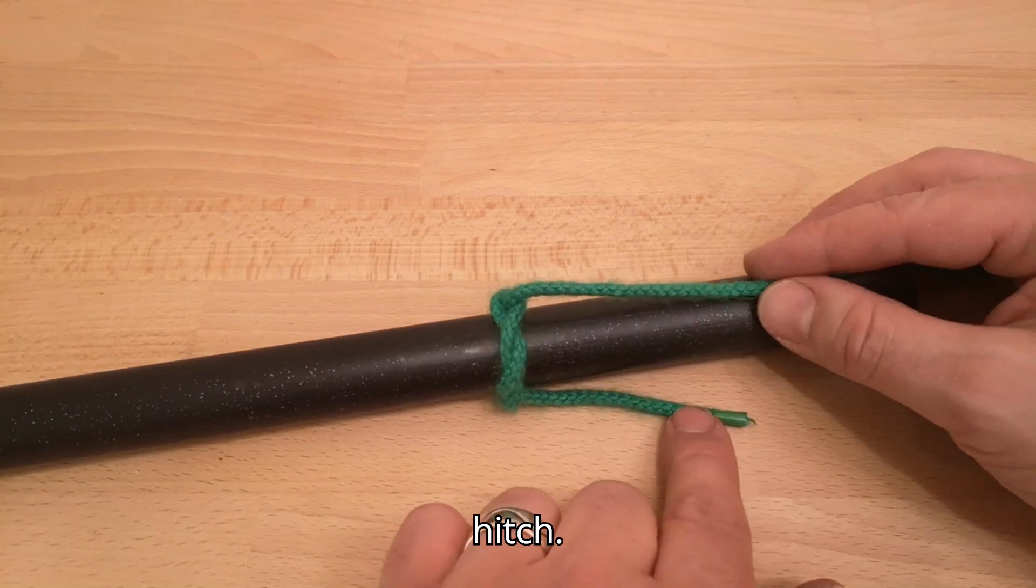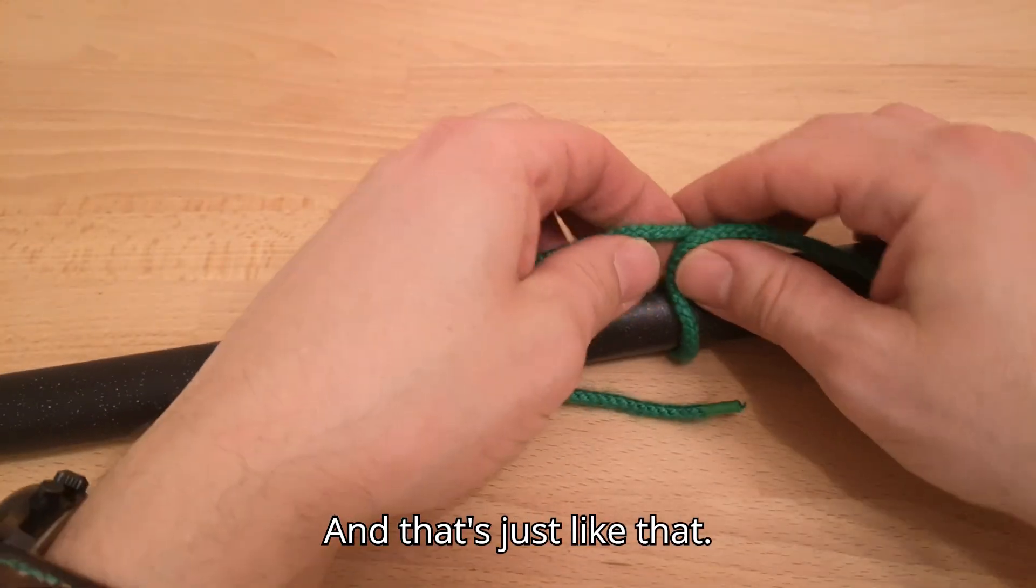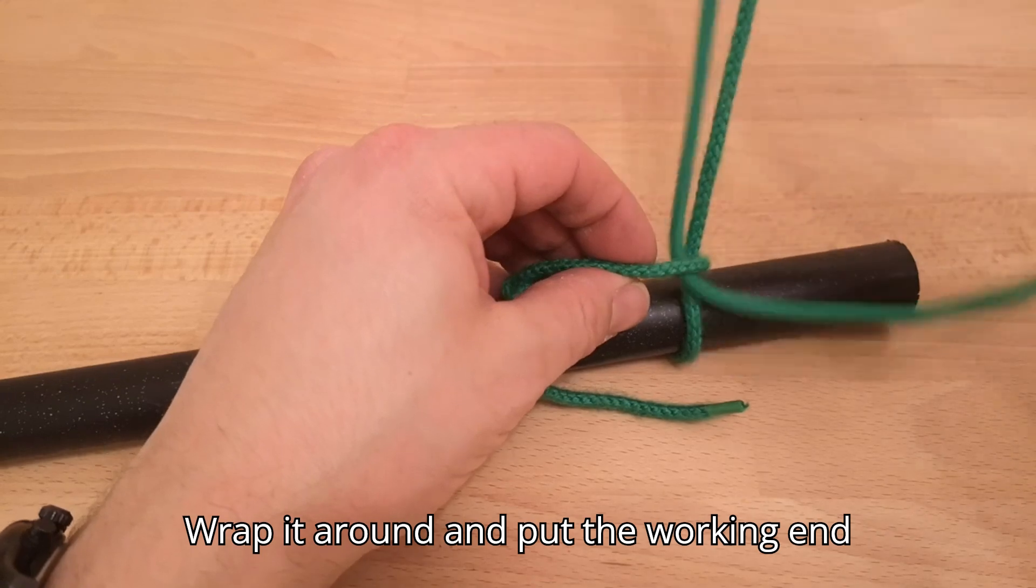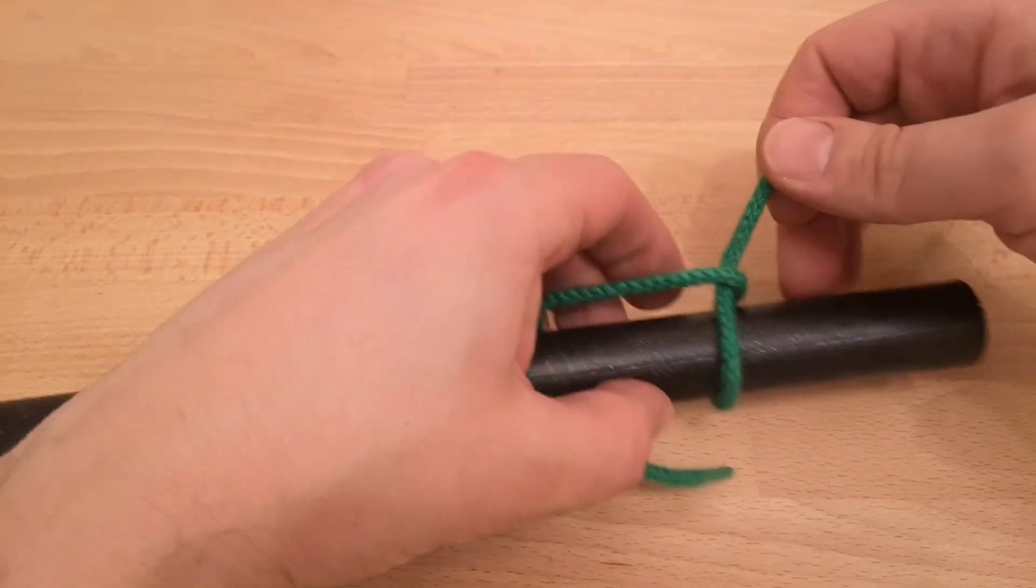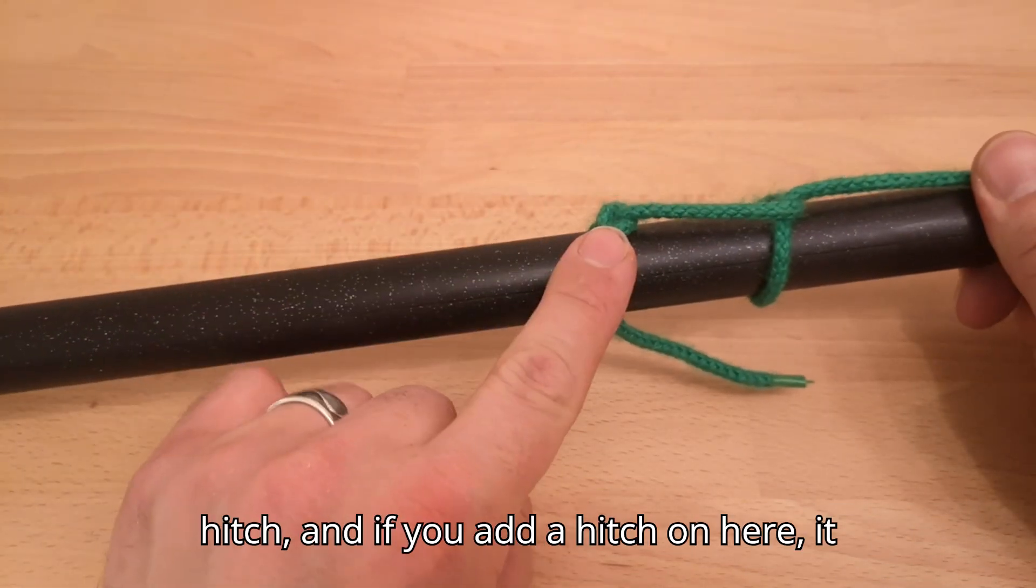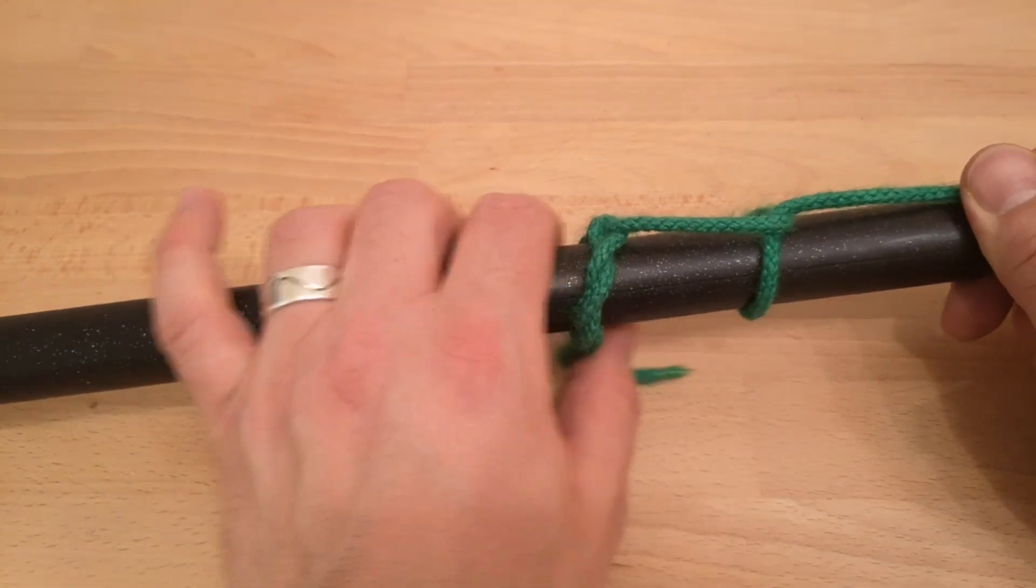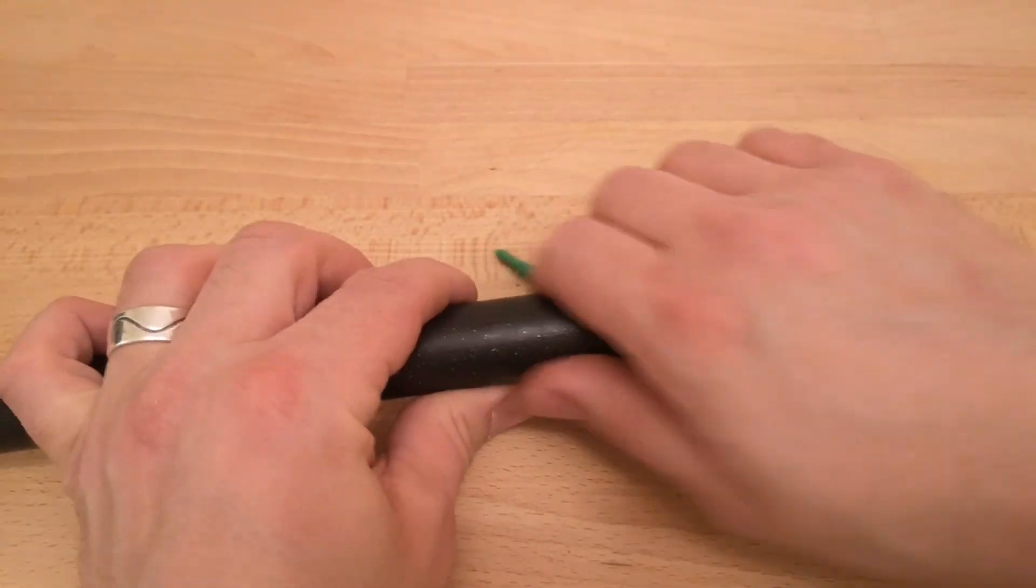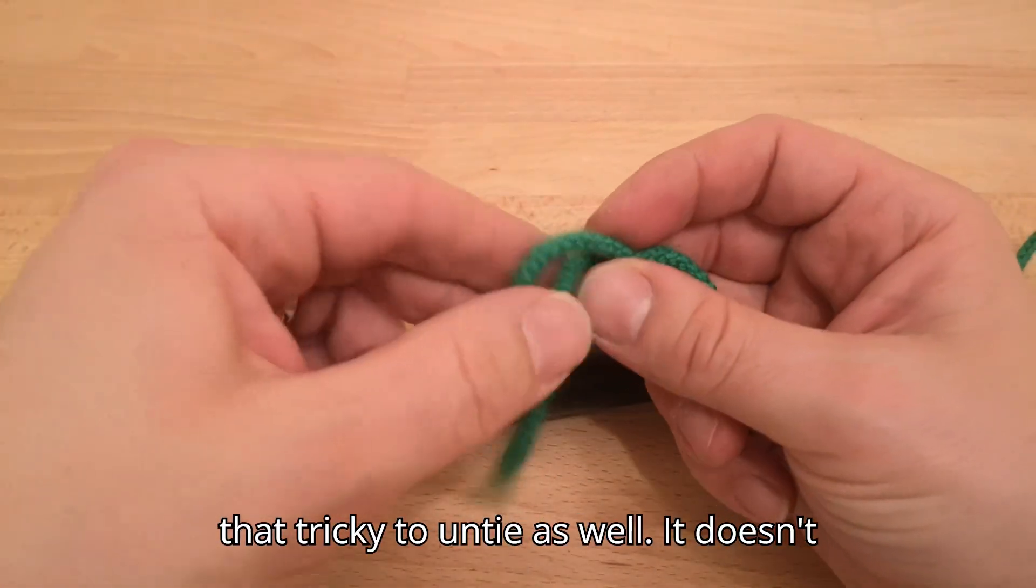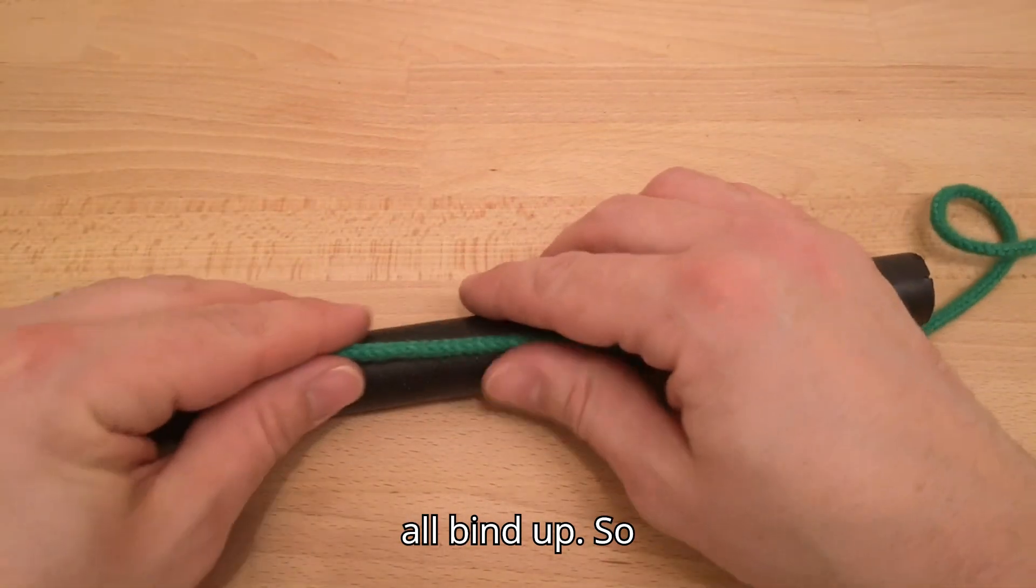And that's just like that—wrap it round and poke the working end through. There you go. So there's your timber hitch, and if you add a hitch on here, it becomes a killick hitch. Let's do that again, shall we? The good thing about this knot: it's not that tricky to untie as well. It doesn't all bind up.